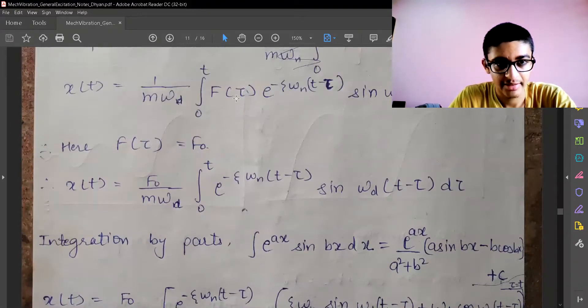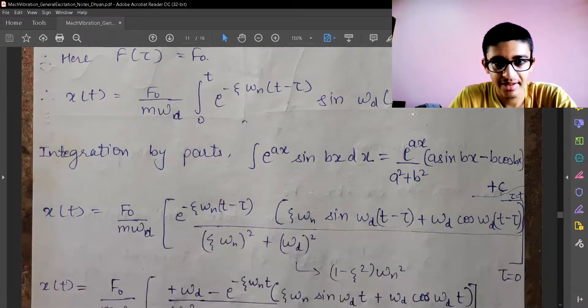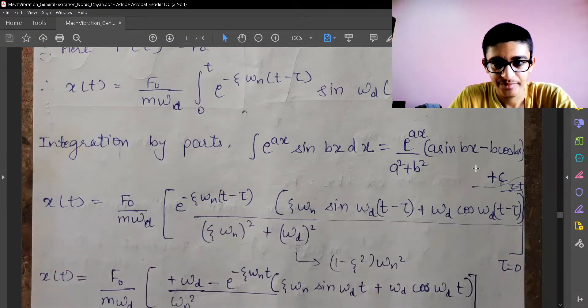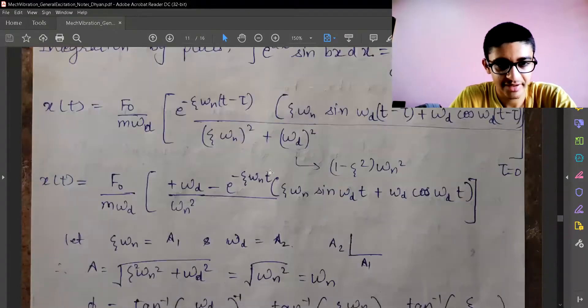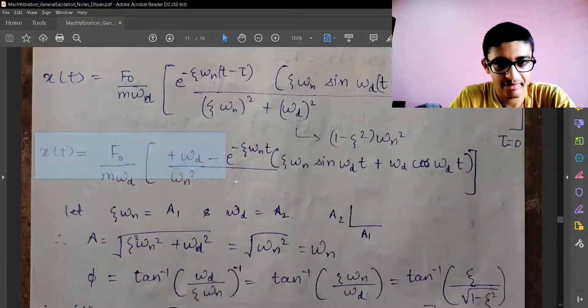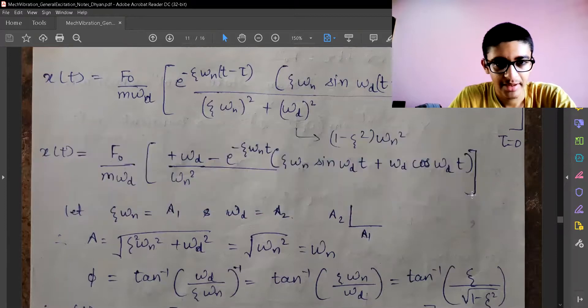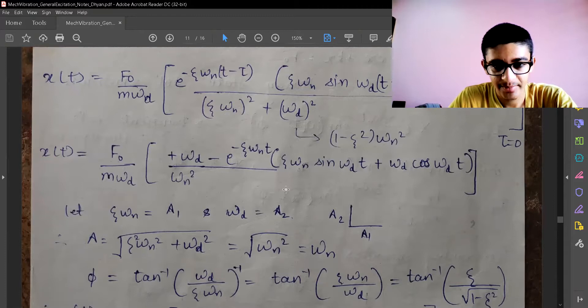This is the general integration we have right now, and F(tau) was F₀ which was constant, so we need to integrate it and get the answer. Using different concepts of integration, this is the final expression, which is very complex.